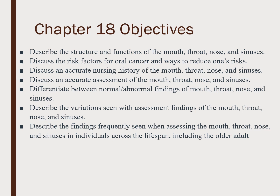The Chapter 18 objectives include describing the structure and function of the mouth, throat, nose, and sinuses, discussing the risk factors for oral cancer, and discussing an accurate nursing history of mouth, throat, nose, and sinuses, differentiating between normal and abnormal findings, describing the variations seen, and describing the findings seen when assessing across a lifespan, including the older adult.